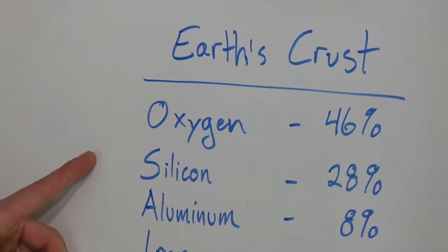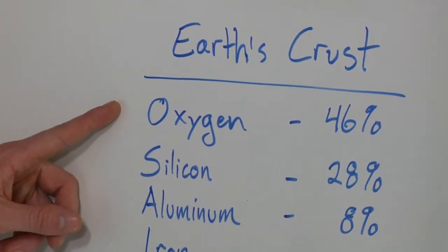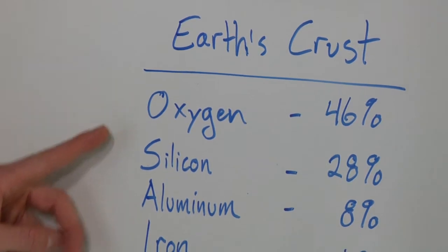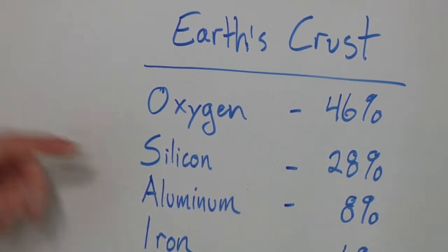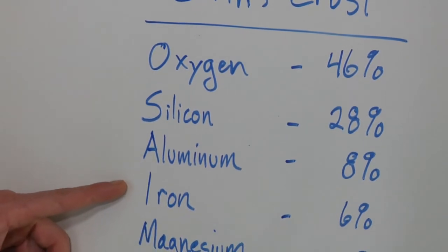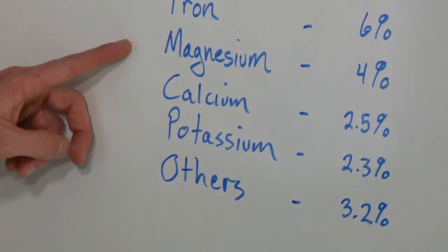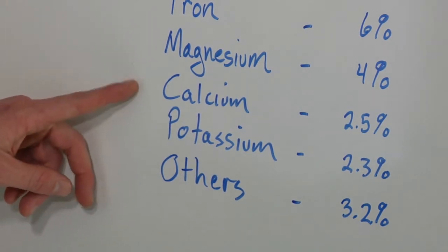The earth's crust is made up of seven major elements. Oxygen is by far and away the most abundant at 46%. Silicon is next, and then you have a couple of metals — aluminum and iron. It's worth noting that the core of the earth is almost 89% iron, so the vast majority of the iron on earth settled to the middle, but some of it is still found on the outside, the crust. Additional elements found in earth's crust include magnesium, calcium, and potassium.